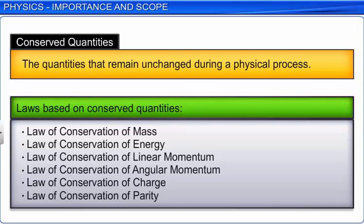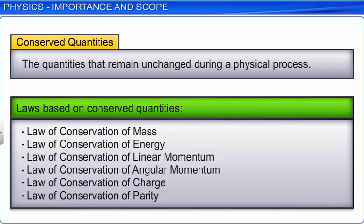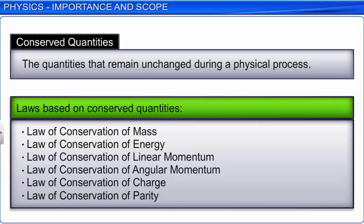Most of these laws are based on some special quantities that remain unchanged in a process, which are known as conserved quantities. Some of the general conservation laws in nature include the laws of conservation of mass, energy,